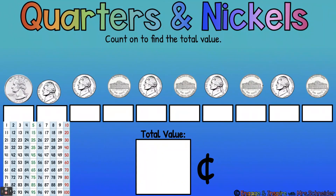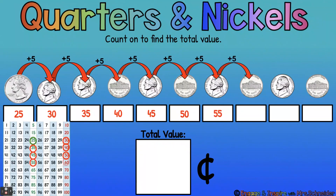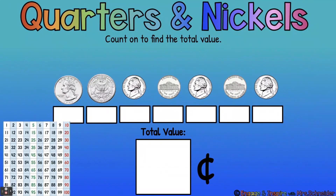Let's count this one. We have one quarter — 25 cents. Put that on our hundreds chart. Now count by fives — zigzag back and forth. 25, 30, 35, 40, 45, 50, 55, 60, 65, 70. 70 cents is our total. Good job.